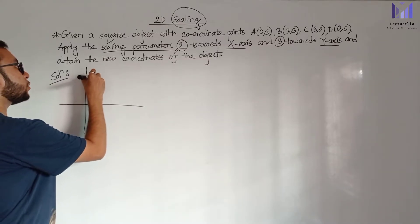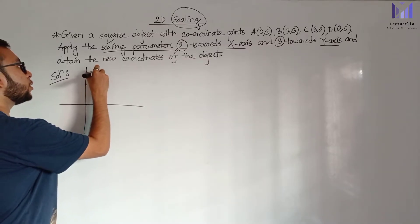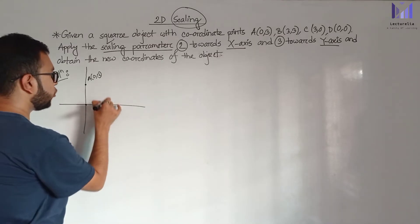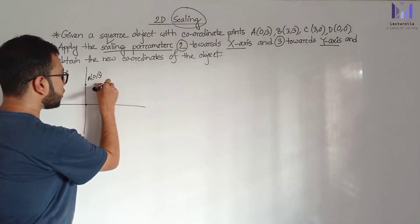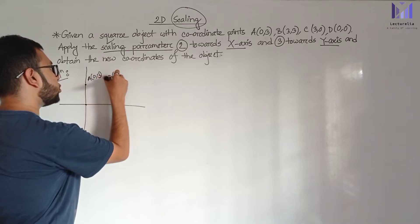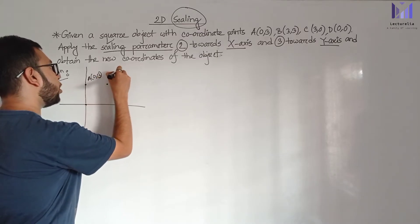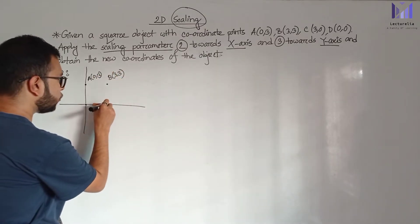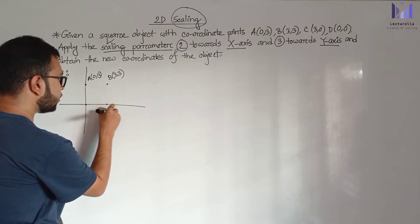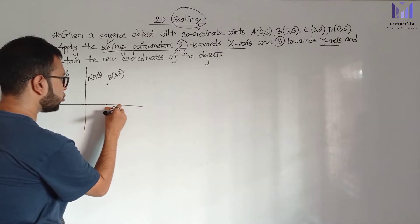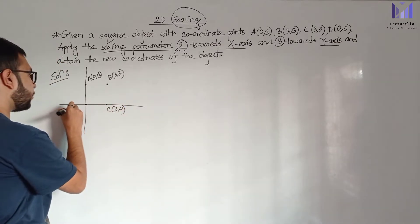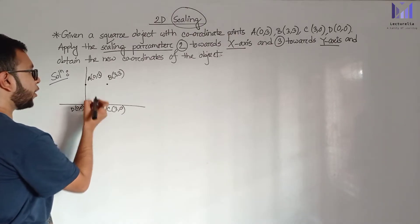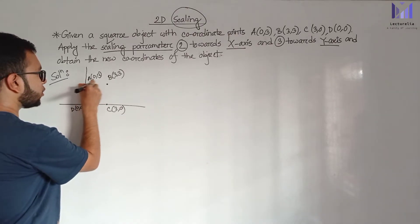The coordinates of the square are: point A is (0, 3), point B is (3, 3), point C is (3, 0), and point D is (0, 0). This forms a square shape on the coordinate plane.